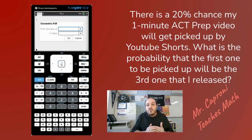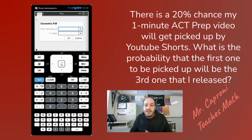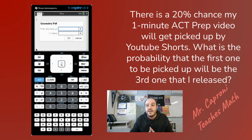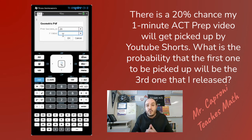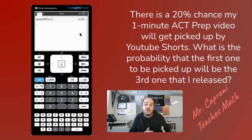When you're dealing with a range of numbers you use CDF instead — for example, what's the probability the first success is in the first two attempts, or any video after the fourth. For this PDF example, the calculator only needs two things: the probability of success — 0.20 as a decimal — and the x value of three. Plug in three and hit enter, and the answer is 0.128, meaning there's about a 12.8% chance that the third video is the first one picked up by YouTube Shorts.